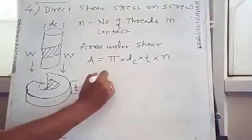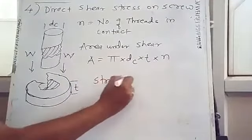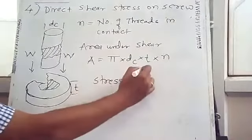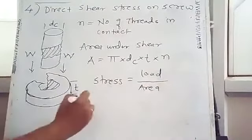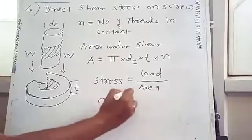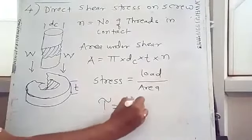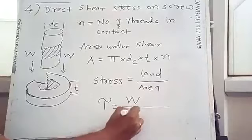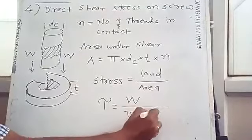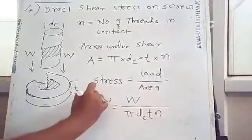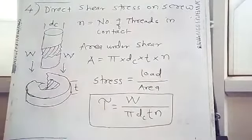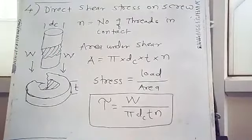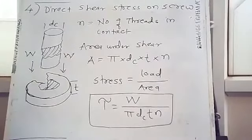The shear stress tau equals load W divided by area, so tau equals W divided by (pi times dc times t times n). This is the equation for direct shear stress on the screw.